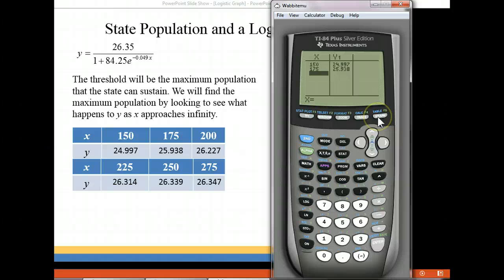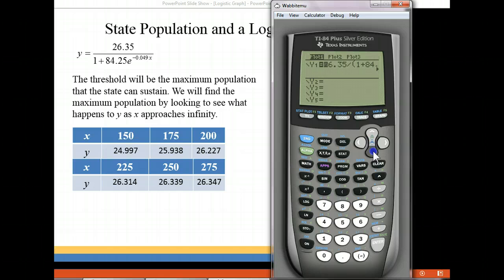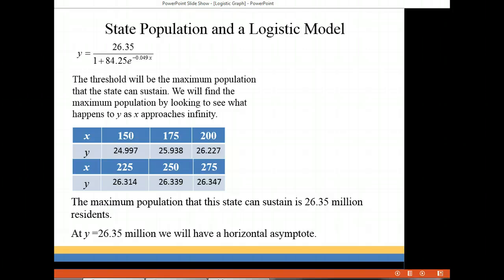So let's go back and look at our graph. So if we put in y equals, let's go to the second one and put in 26.35. So that would give us a horizontal line at 26.35. And go and graph it again. You can see that that is that maximum point there. That's our threshold amount for this particular state. So our maximum population that this state can sustain is 26.35 million residents. And that gives us a horizontal asymptote for our graph at 26.35 million.